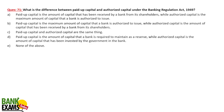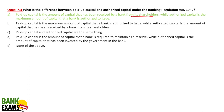Question 71: What is the difference between paid-up capital and authorized capital? Paid-up capital is the amount of capital that has actually been received by a bank from its shareholders. Authorized capital is the maximum amount of capital that the bank is authorized to issue. Option A is the correct answer.